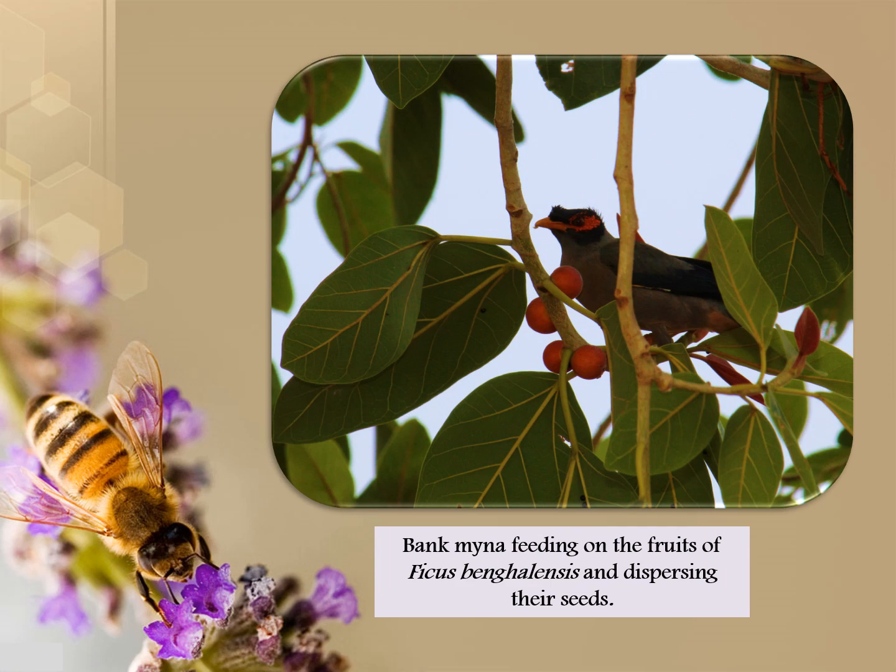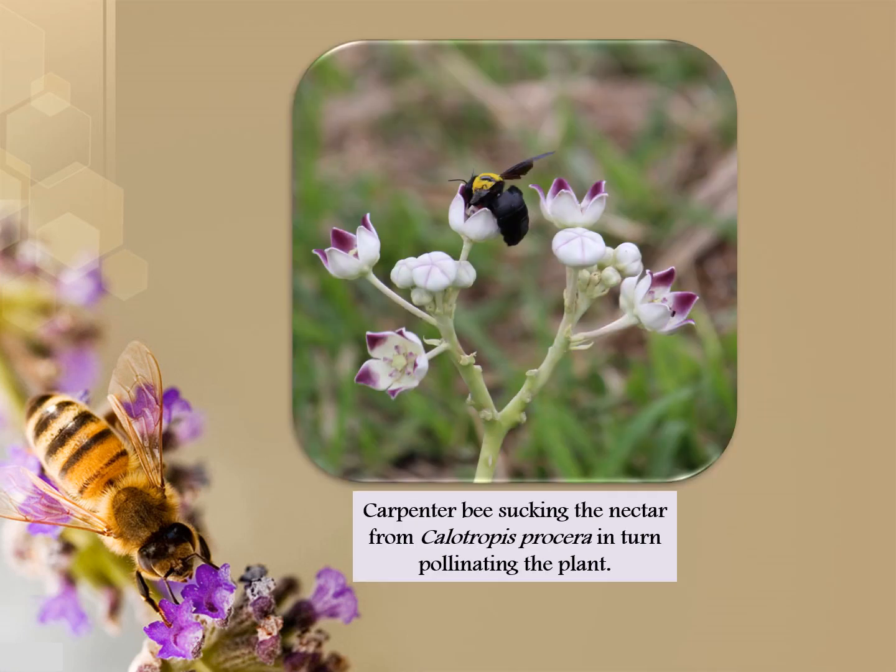The baya weaver feeds on the fruit of Ficus bengalensis and disperses its seeds. The carpenter bee sucks nectar from Calliotropes procera and in turn pollinates the plant.